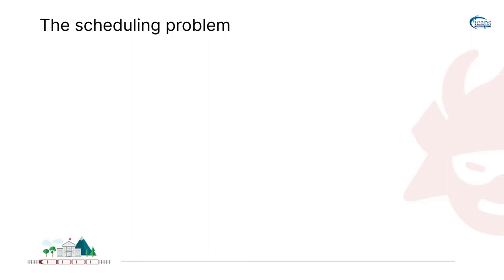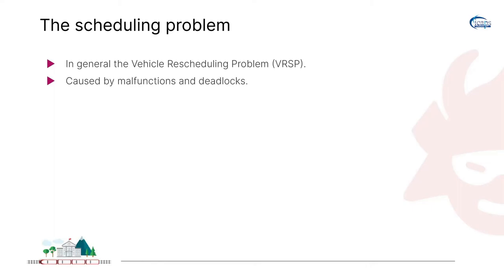At its core, it's the vehicle scheduling problem. At the moment, to manage traffic and networks in real life, railway companies use methods based on operations research, or OR for short. These methods worked well, but they don't work well enough if you have quite a lot of stochastic factors in your environment like malfunctions and deadlocks.